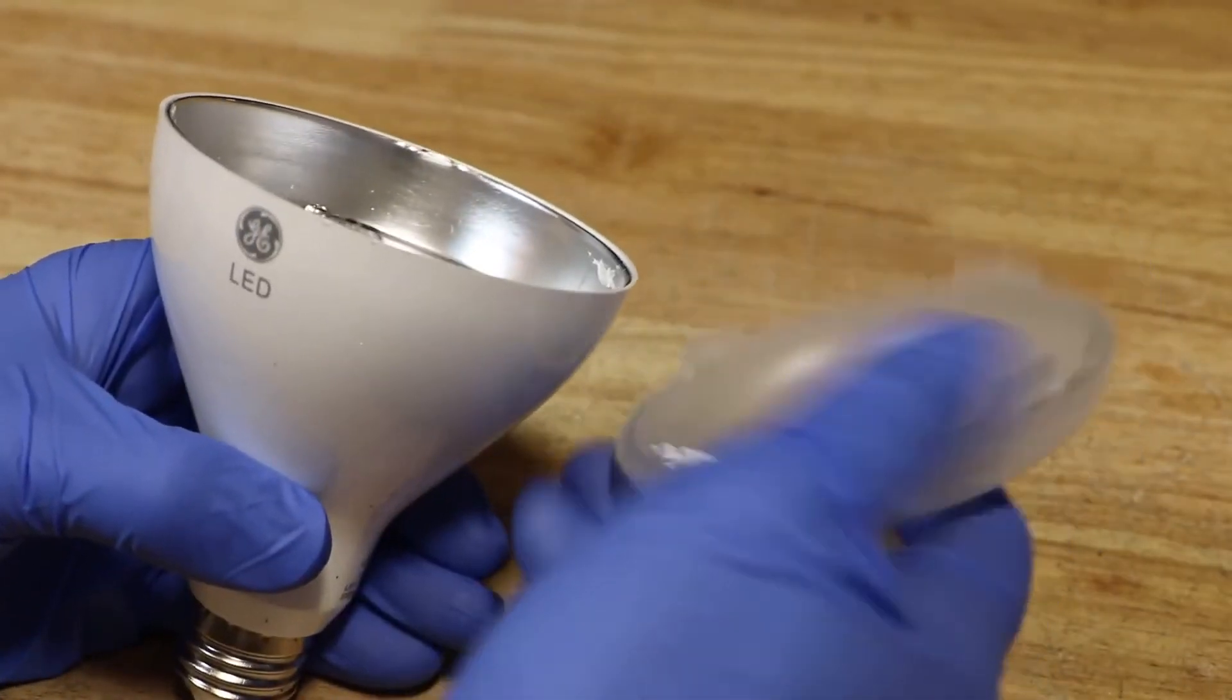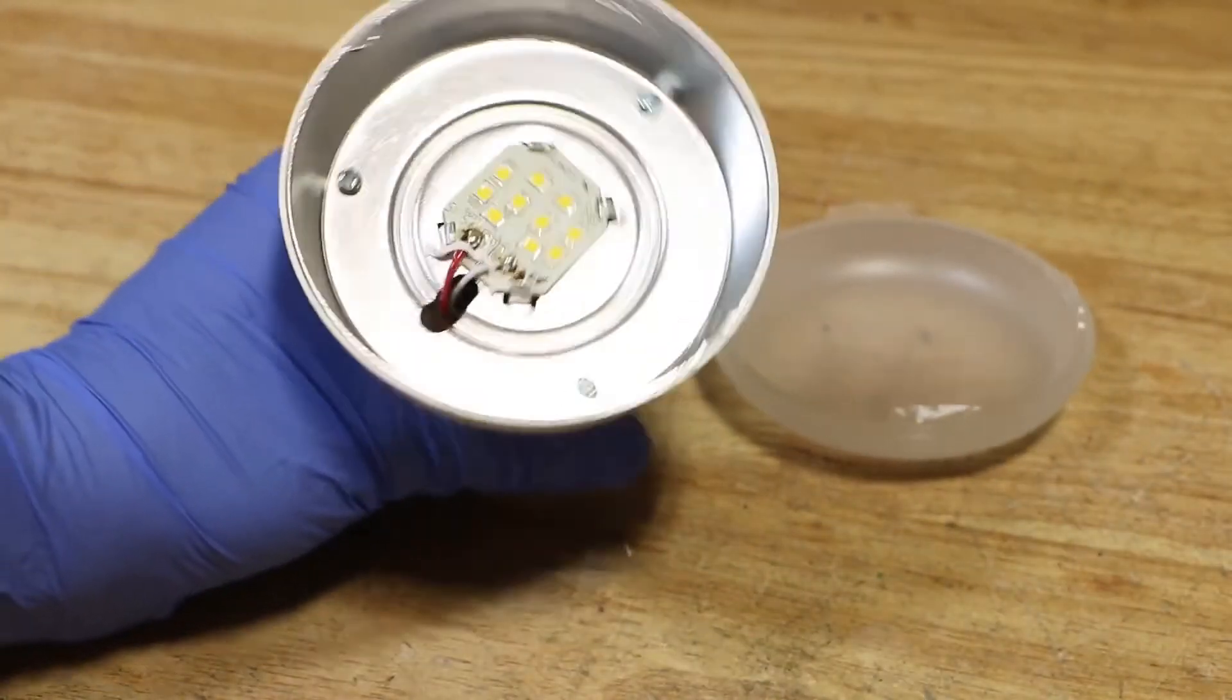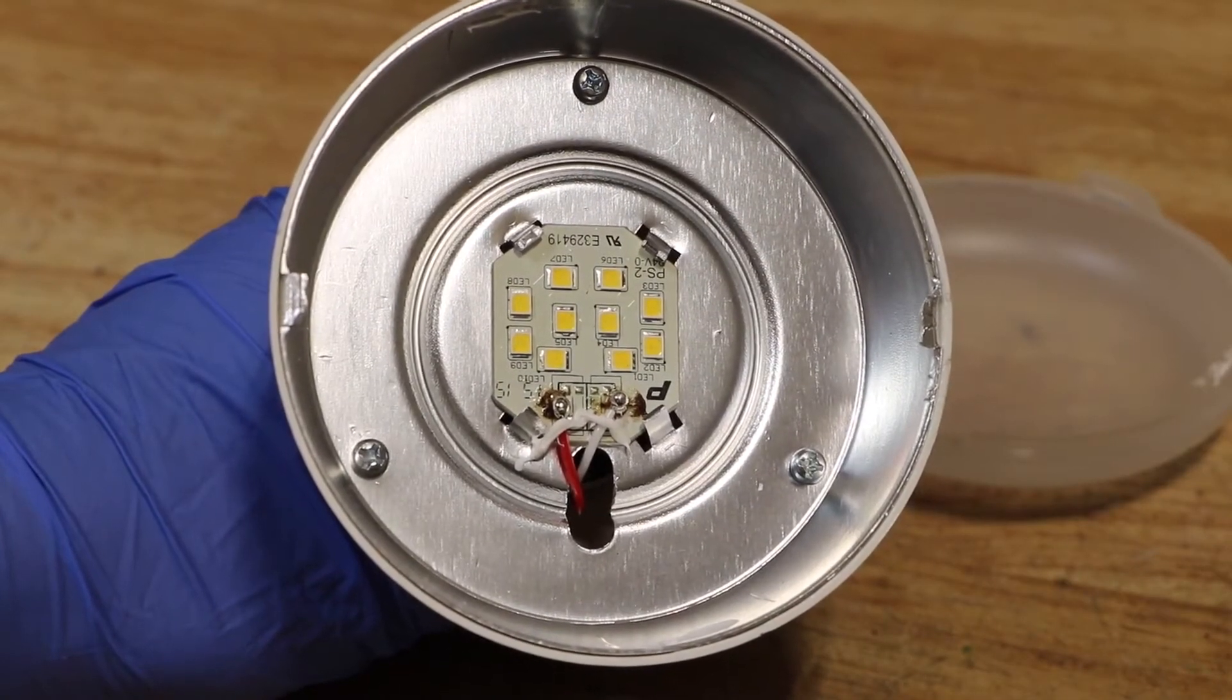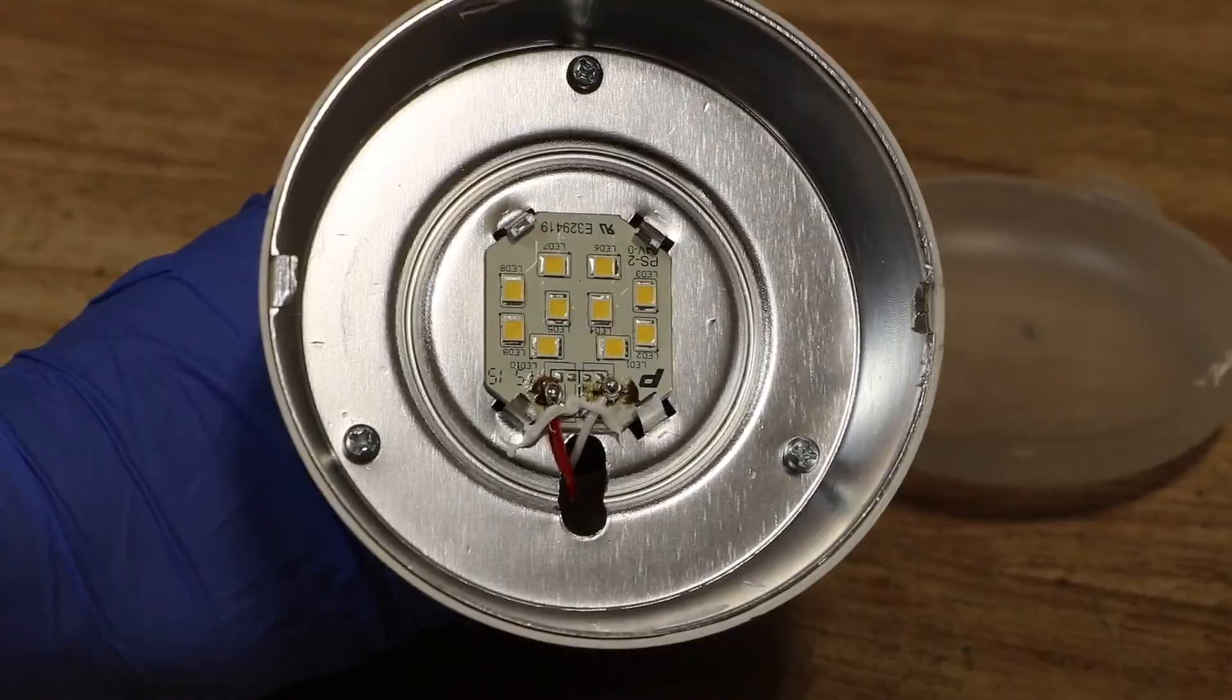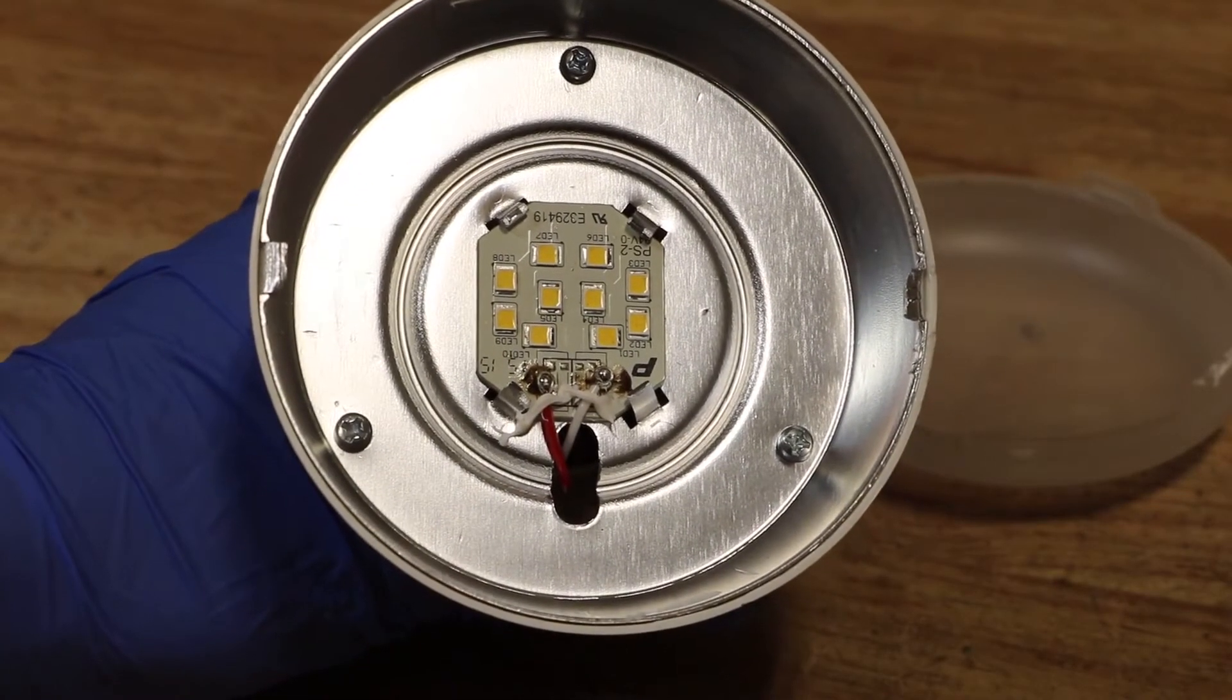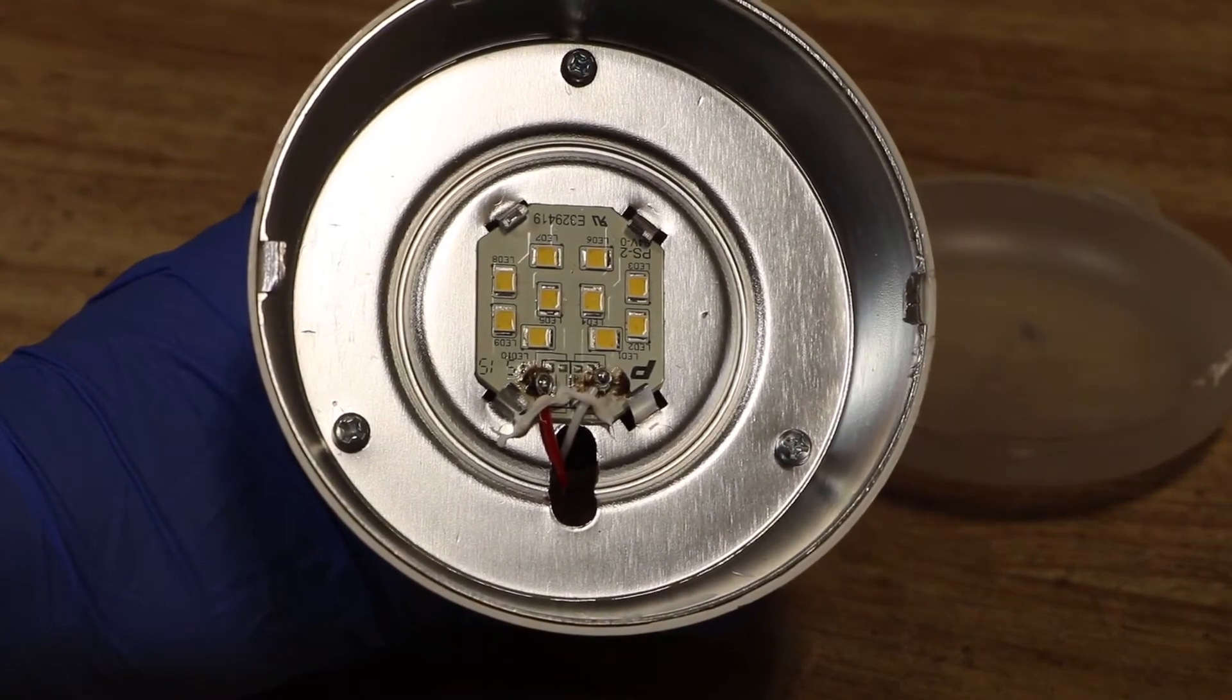There's the plastic top removed and here we can see the inside. The inside of the light consists of this reflector bowl with the LED circuit board. The circuit board is soldered into place so I'm going to go ahead and pop the clips off to free it from the reflector.